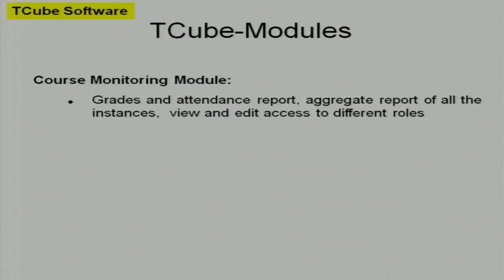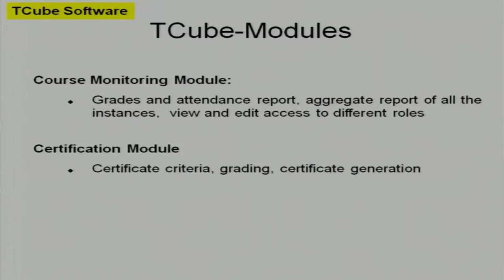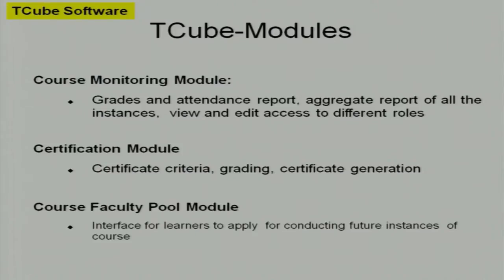The course monitoring module - grades and attendance reports will be collected, analysis will be done, different types of analysis will be shown, and aggregate reports of all the instances will be generated. View and edit access for different roles will be given. The certificate module will handle grading based on the certificate criteria defined by the faculty, and certificate generation will be done from the T-Cube software. The faculty pool module will develop an interface for learners - once they complete the course successfully, they can apply for assistant faculty position. That interface will be visible to the faculty, who will decide whether to accept them or not.